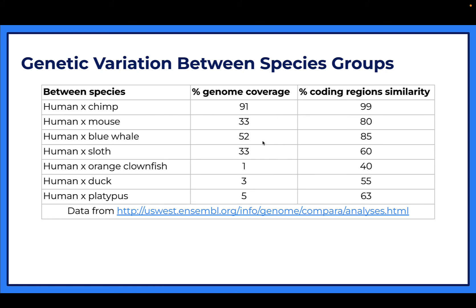For example, 52% of the entire genome is shared between humans and blue whales, but if we look at just the coding regions that code for proteins, they share 85%. Many species use a lot of the same proteins - all of the amino acids which make up proteins are the same across species, and many proteins are needed by all different types of species. We'll be studying protein synthesis soon, so this will make more sense later.